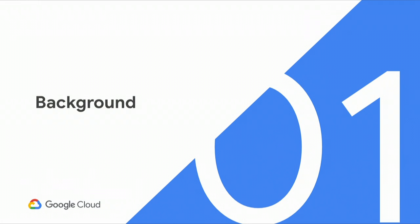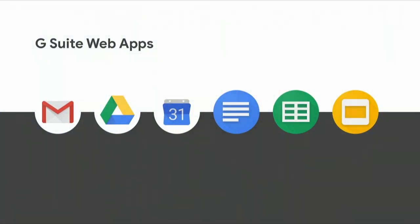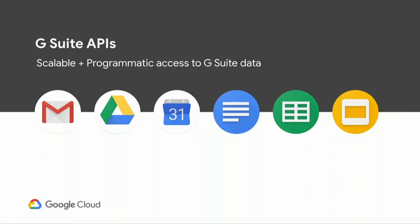First, a quick background on what we're doing today and how our application works. You probably know about the various G Suite web apps, everything from Gmail to Calendar to Slides to Docs to Sheets, and so on. But what you may not know about are the APIs behind these apps that effectively provide us scalable and programmatic access to the G Suite data underlying these applications.